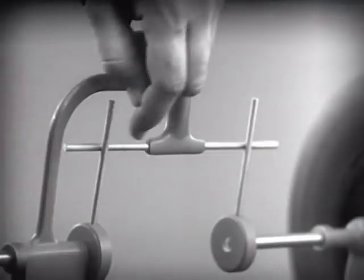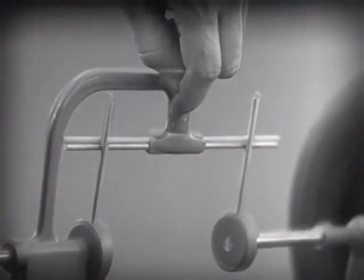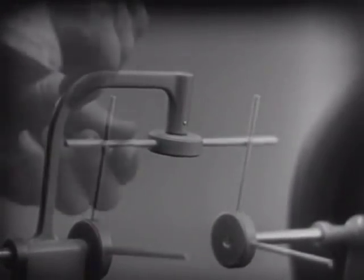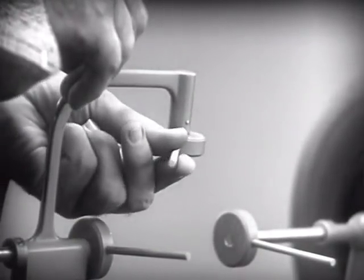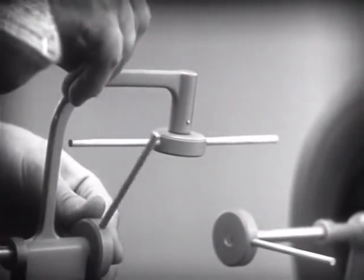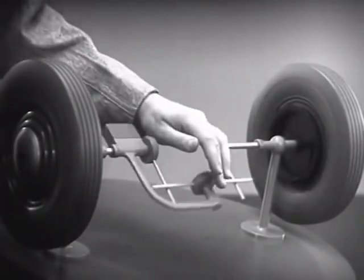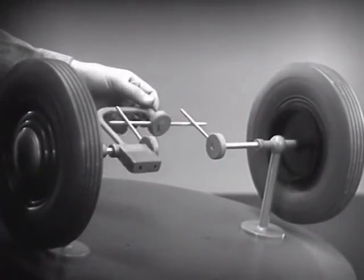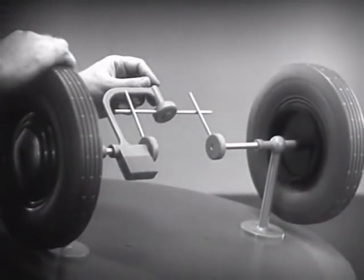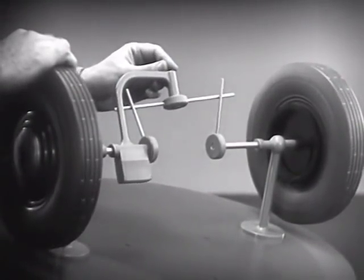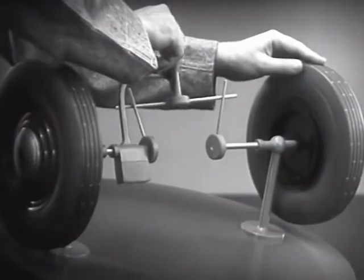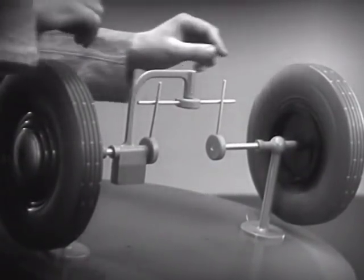Let's put this bar on a pivot so that it can swing in either direction. Now, the bar can still turn both wheels at the same speed. And because it pivots, it lets one wheel turn even when the other is stopped.